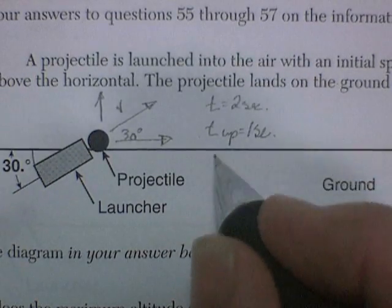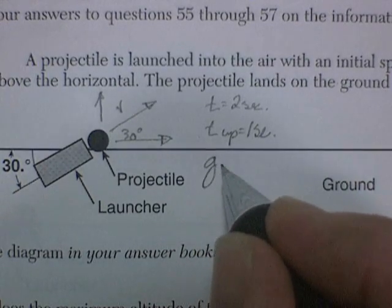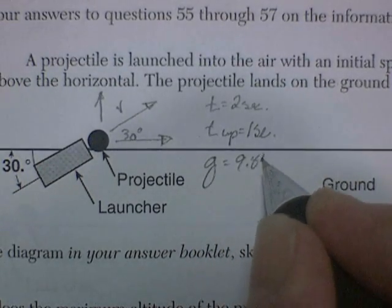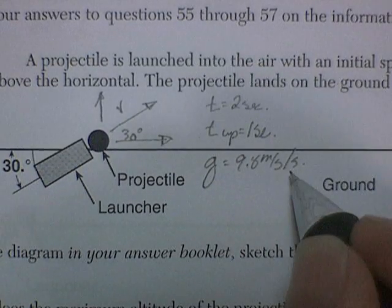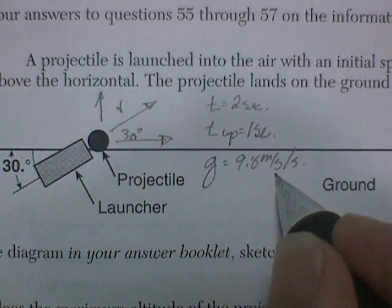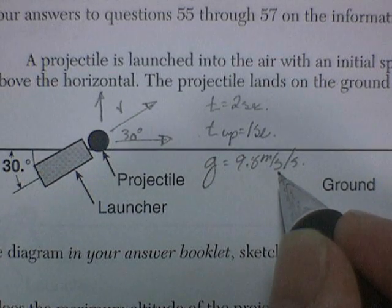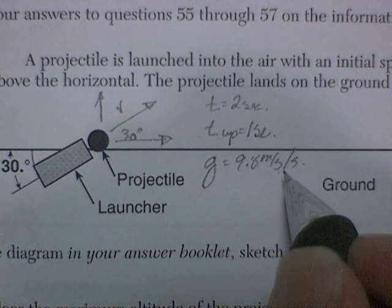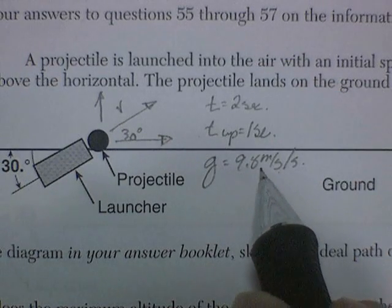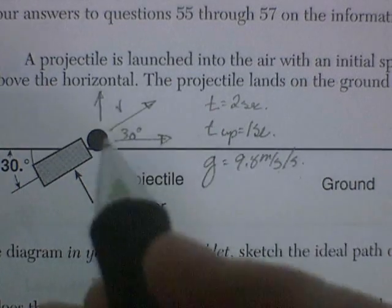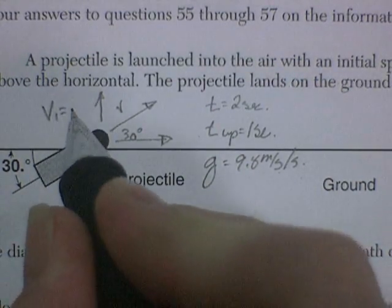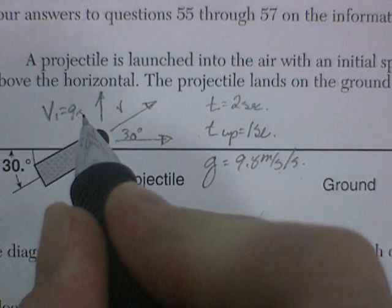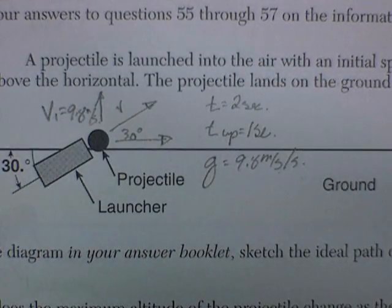We know that the velocity changes. The acceleration due to gravity is 9.8 meters per second per second. That means for every second an object is under the influence of gravity, its velocity changes by 9.8 meters per second. So it's reasonable to assume that if this ball goes up for one second and its velocity changes at 9.8 meters per second per second, its initial velocity in the upward direction would be 9.8 meters per second.